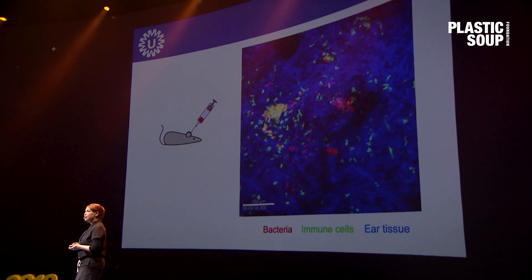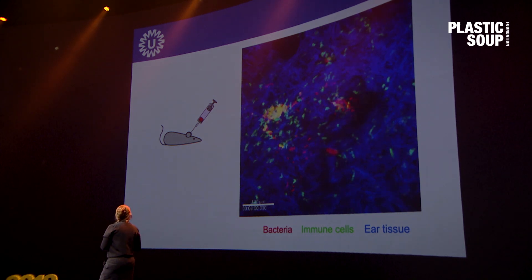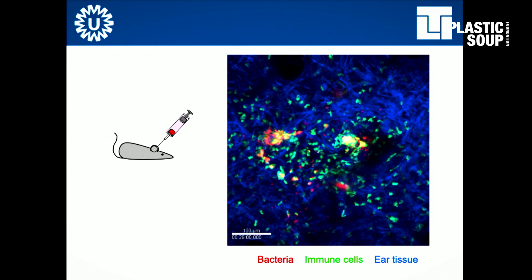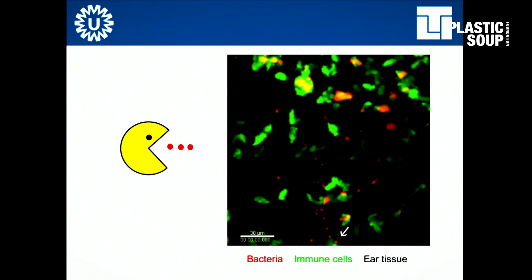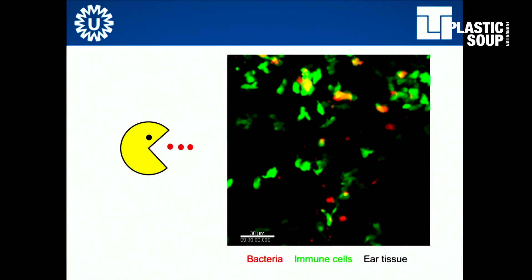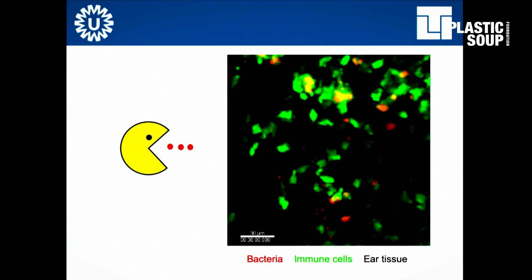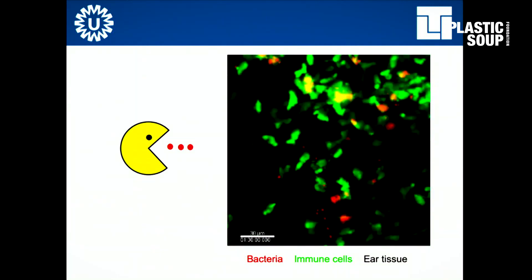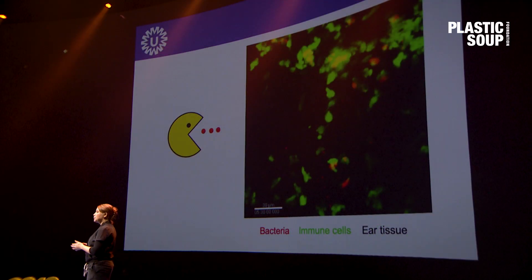In blue you can see the tissue of the ear of the mouse, because I injected the bacteria in the ear. In red you can see the bacteria, and in green the immune cells. When I start playing this movie, you can see the immune cells starting to attack the bacteria. Your immune cells in green are really swarming to these bacteria in order to contain them. Zooming in, you can see that these immune cells are like pac-men — they can engulf the bacteria and take them along, being recruited to bigger colonies of bacteria, after which the immune cells can degrade them.